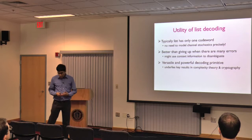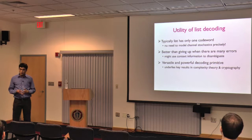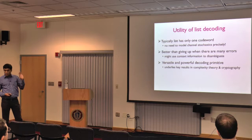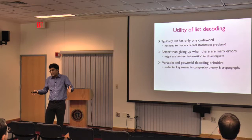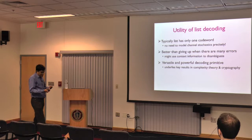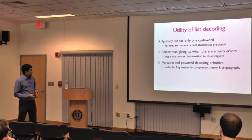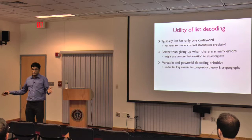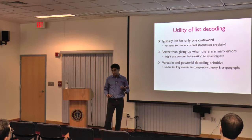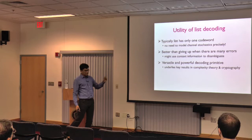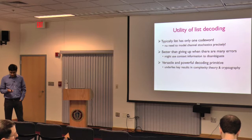A natural reaction to list decoding is: what do I do with the list when I want to communicate uniquely? For typical noise models, the list will only have one codeword. It removes the need to model the channel precisely — you just say it's worst case, and in pathological cases you output more than one codeword. That's better than giving up. List decoding is also a versatile primitive with many applications in complexity and cryptography beyond communication.